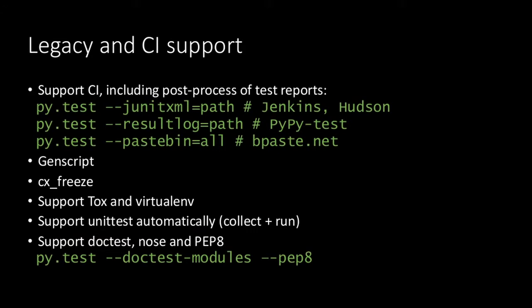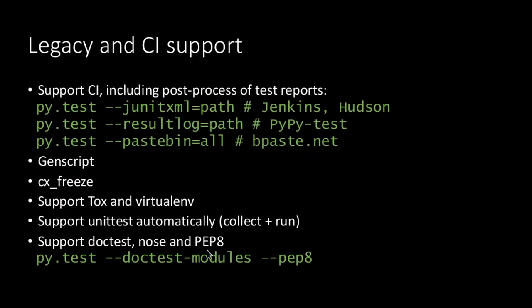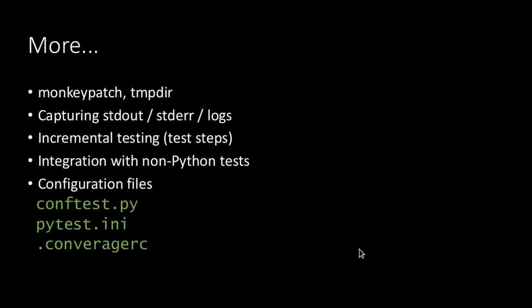There is also support for legacy frameworks and continuous integration. If you work with Jenkins or any other CI server, you can configure your output to work with it. PyTest can collect and run DocTests you already have. If you used UnitTest and have 100 tests already implemented, you don't have to re-implement them — you just run PyTest and it will collect and run them for you. The same goes for DocTest and Nose.